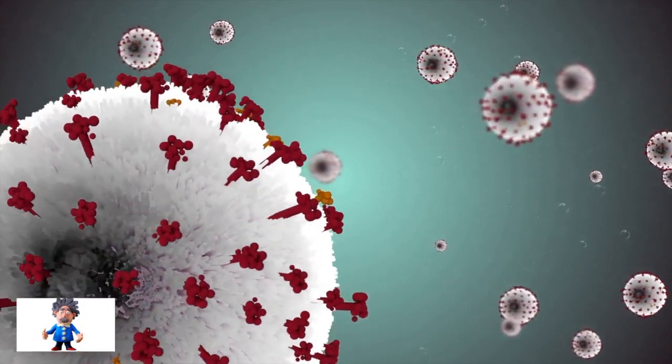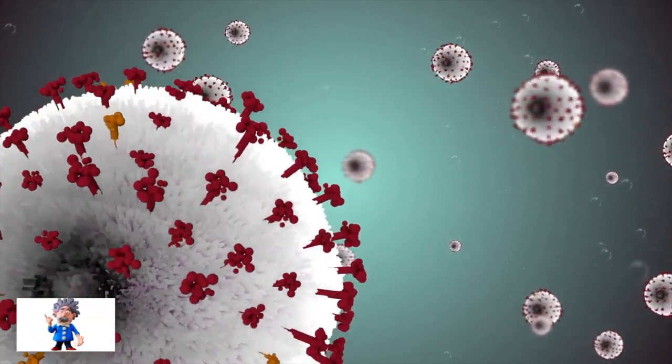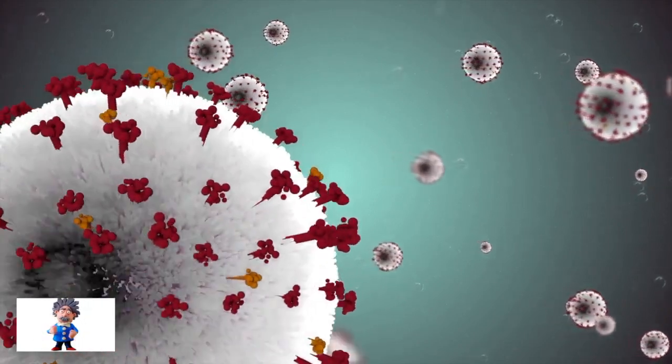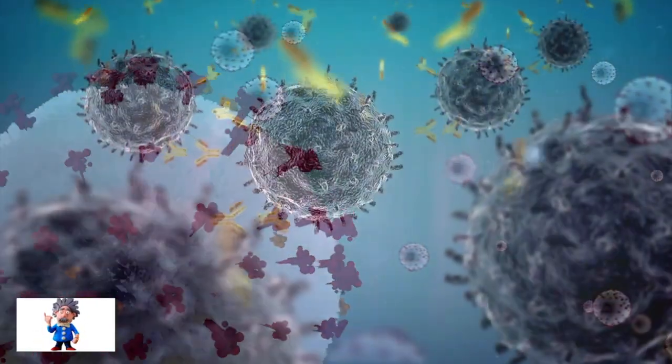Effectively, the 30 mutations discovered in the Omicron variant will change the shape of the spike protein, making it harder to detect by the immune response which the vaccines have induced.